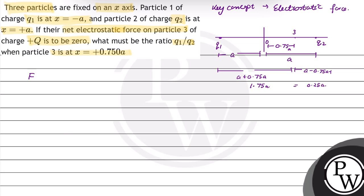The net force on particle 3 due to particle 1 will be equal to k times q1 times q3 upon the distance between them, that is 1.75a, whole square. Similarly, the force on particle 3 due to particle 2 will be equal to k times the charge on particle 2 and charge on particle 3 upon the distance between them, that is 0.25a, whole square.